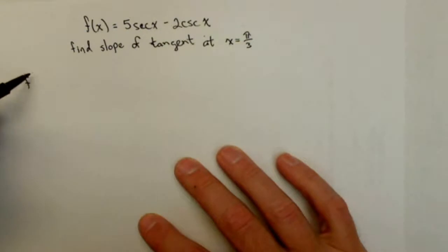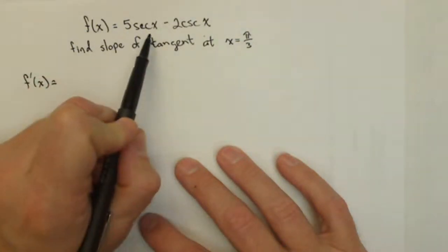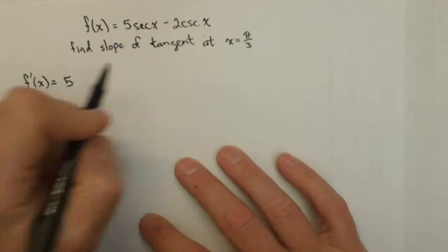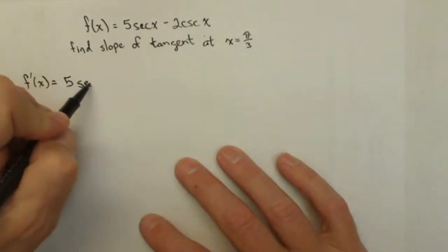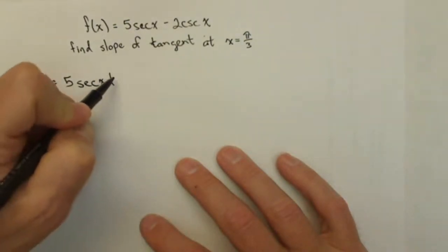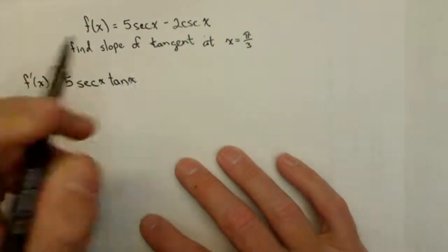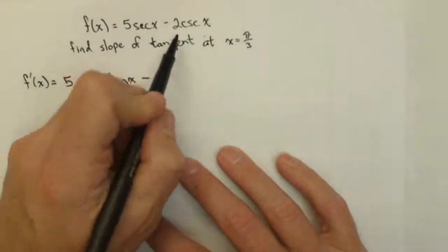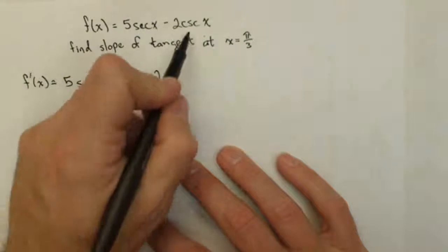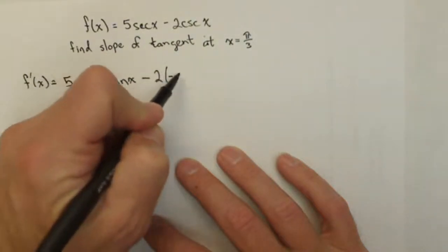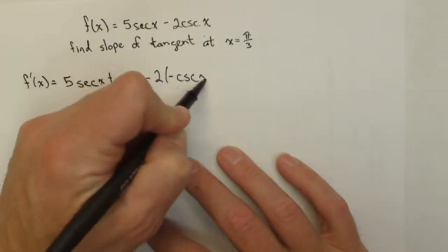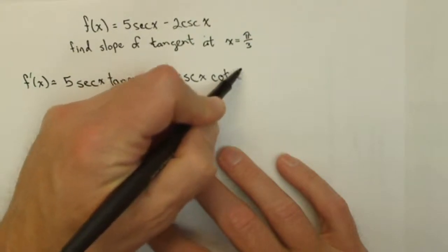First, we'll find our derivative f'(x). The derivative of 5sec(x) is 5sec(x)tan(x), minus two times the derivative of csc(x), which is negative csc(x)cot(x).